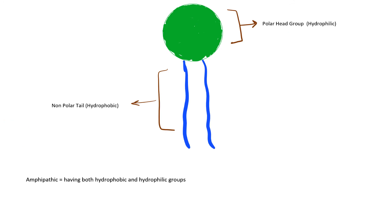Now let's look at how phosphoglycerides interact with water. The circle represents the identity molecule, phosphate group, and glycerol backbone, while the tails are the fatty acids. Fatty acids are nonpolar due to their long chain of carbons, which don't carry a charge. This is why fatty acids don't interact with water — they are called hydrophobic.